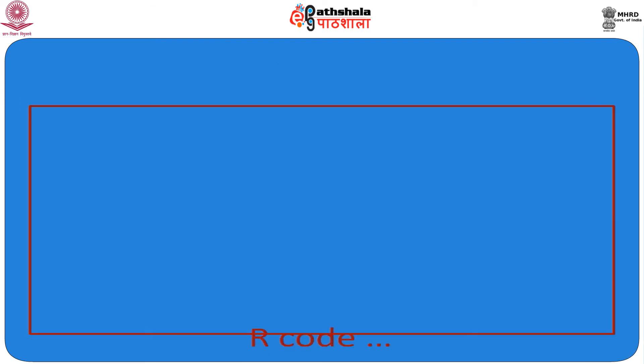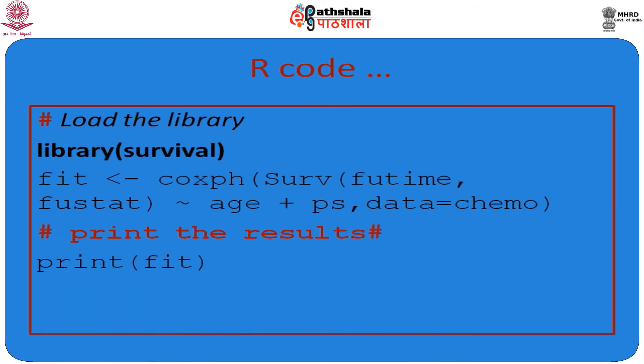Now we go to the R code to generate the Cox proportional hazard model. Before that, we load the library: library(survival). Within that library, the coxph function will work. We call coxph with Surv(fu_time, fu_stat) on the right-hand side, including covariates age and PS, with data equal to the chemo dataset. The whole thing is assigned as 'fit', and printing fit gives us the result.